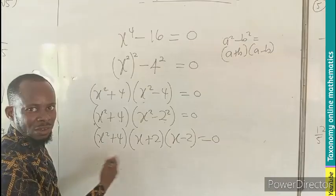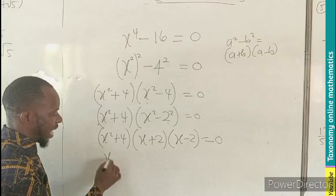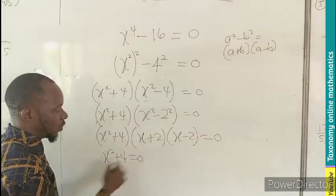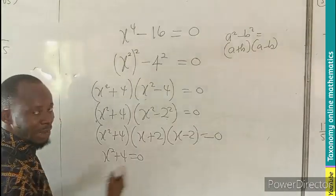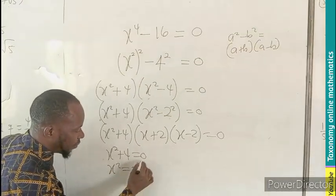So now we have three brackets, all will be equal to 0. So here, I will be having x squared plus 4 equals to 0, whereby this must cross. So I have x squared equals to negative 4.